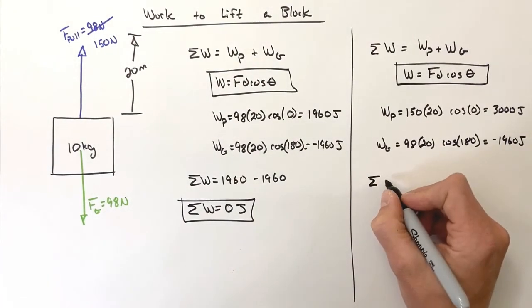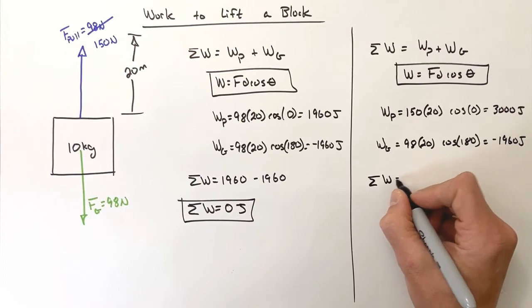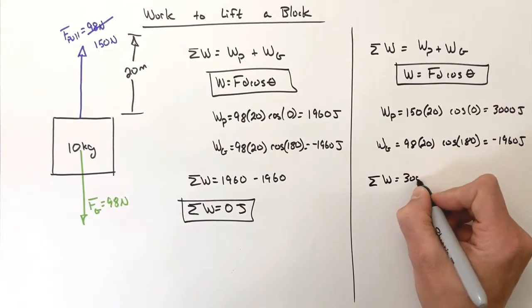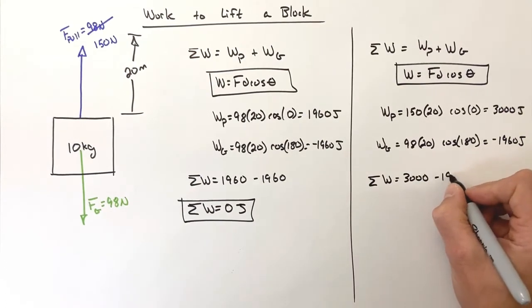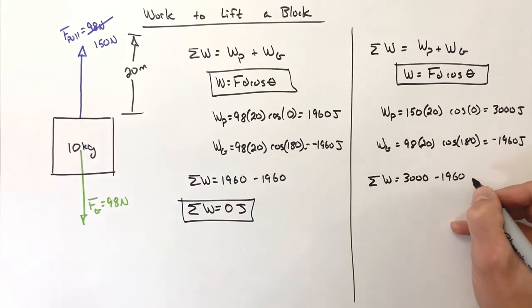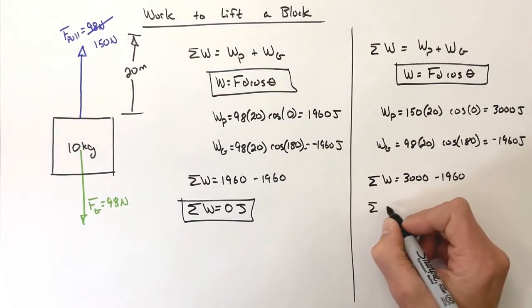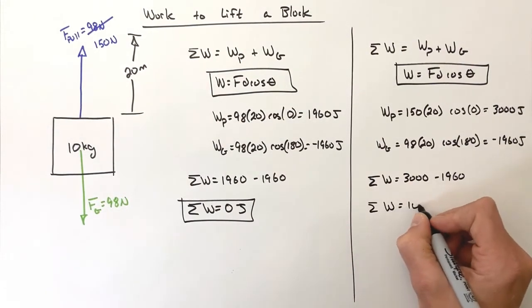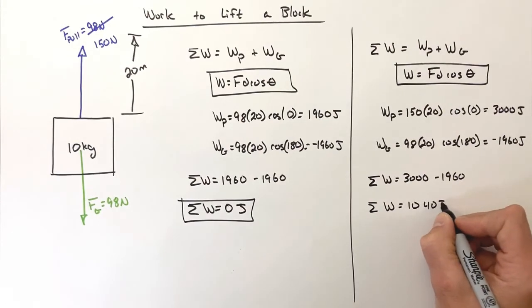So the total work in this case is going to be 3000 minus 1960 joules. So the total work is 1040 joules.